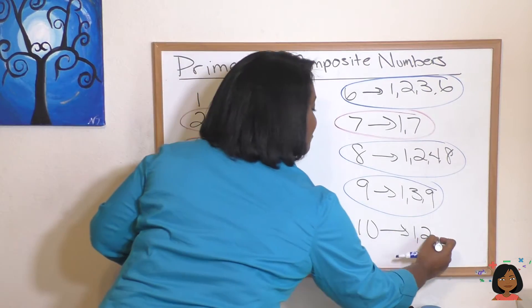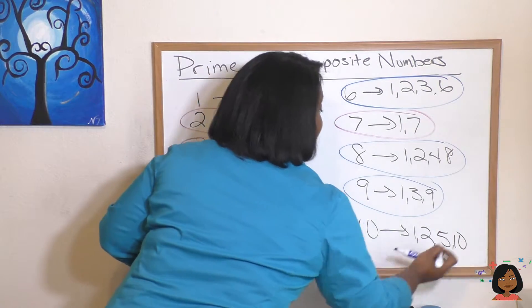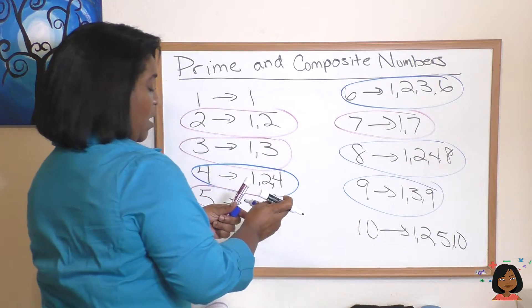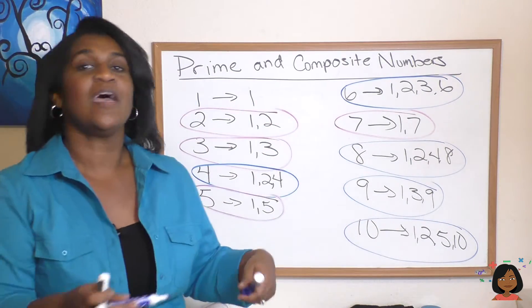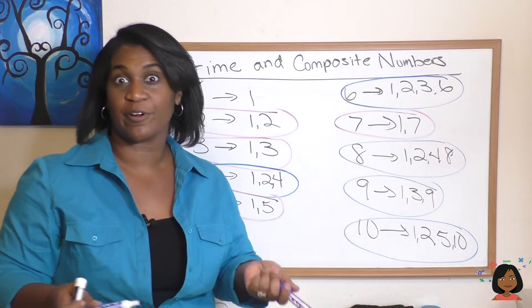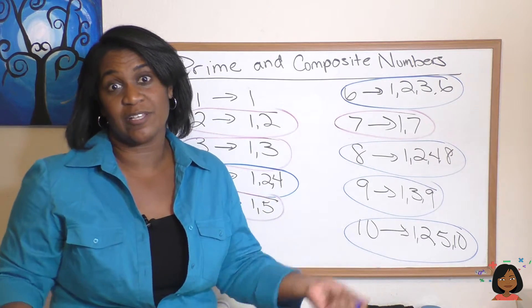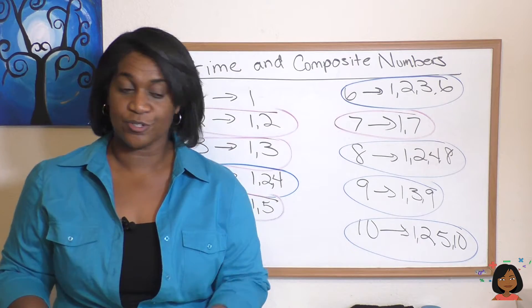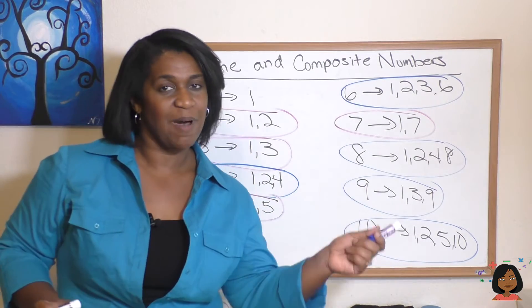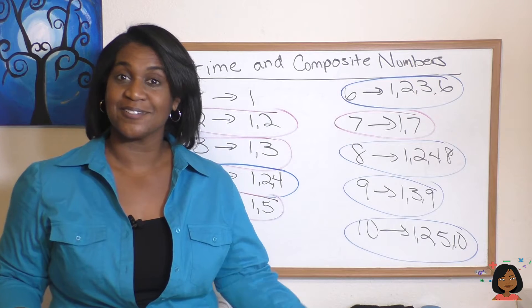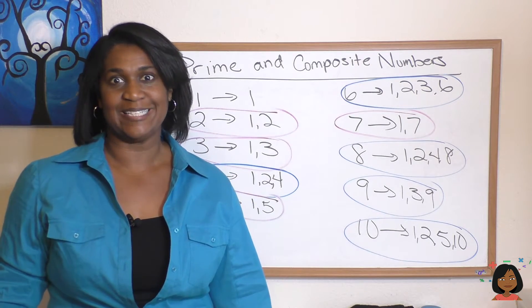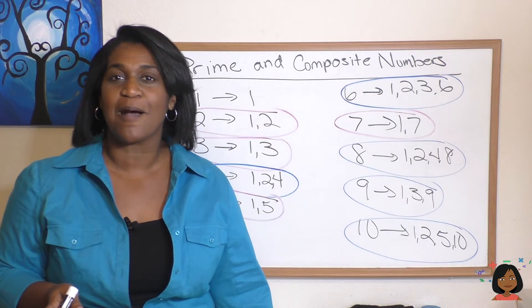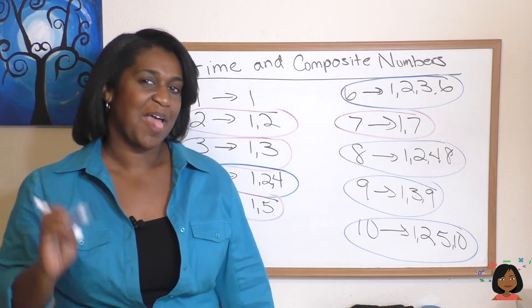Now we could go on and on. We could look at numbers past ten and again determine if they're prime or composite. And again, the easy rule is prime has two factors, one and itself, composite has three or more factors, and that's it. Prime and composite numbers, pretty easy. All right, make sure you try some practice problems and I will see you next time, bye.